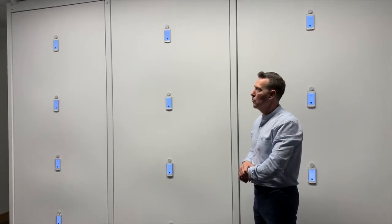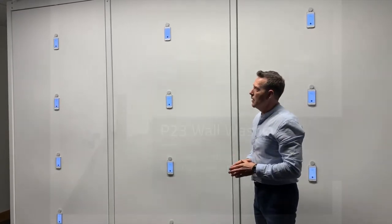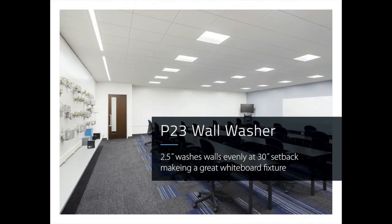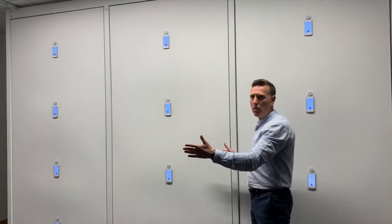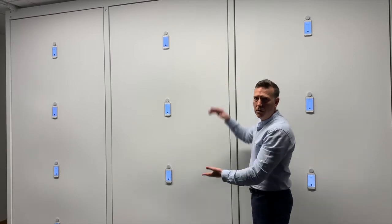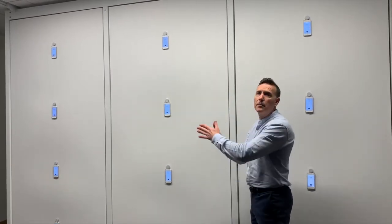Now what we've done is we've chosen our P23, which is our two inch aperture wall washer. They both are wall washers, they both act the same way, however they give very different results. Now all of our wall washers from Prudential are designed to be a 30 inch setback from the wall given that it's a nine foot wall. Obviously if the wall grows in height, the setback grows as well.